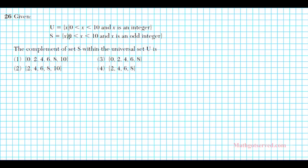So let's go ahead and write down all the elements of set U and set S and then determine what the complement of set S within the universal set U is. So set U basically involves all the integers between 0 and 10. So for set U, the universal set, we have you don't include 0. You go 1, 2, 3, 4, 5, 6, 7, 8, 9. 10 is not included here so do not include 10.